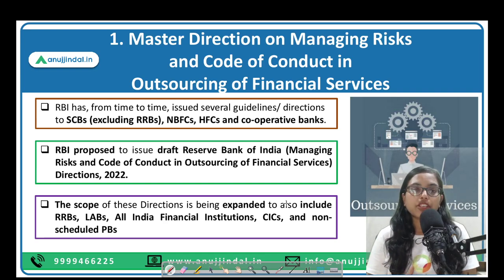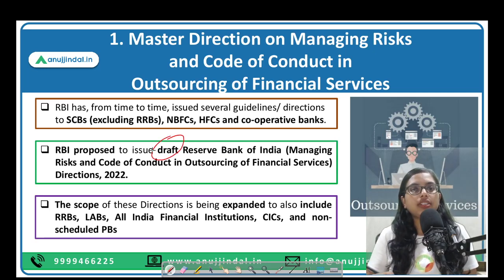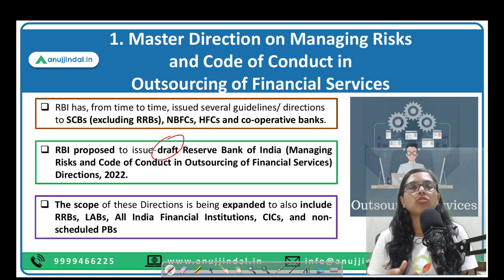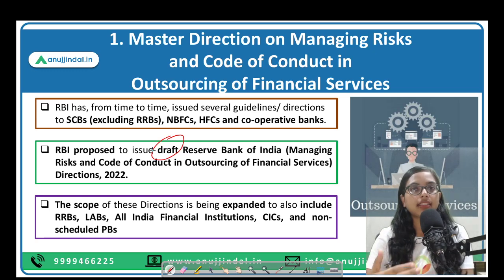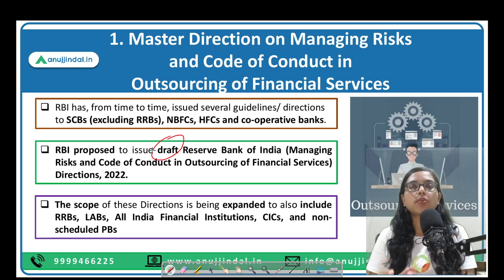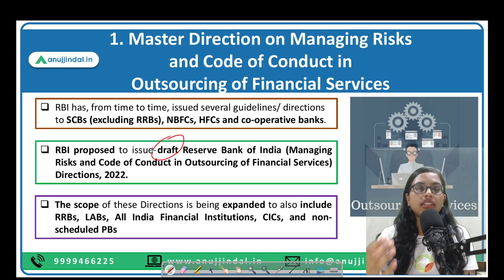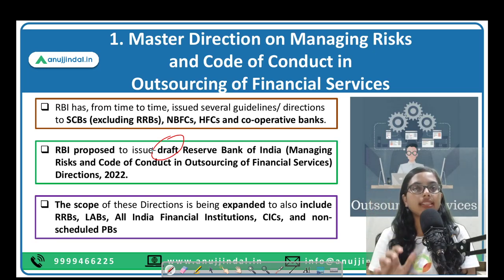We'll start with regulation and supervision. RBI has talked about two major developments: first, bringing a master direction on outsourcing of financial services; and second, including credit information companies in the Reserve Bank Integrated Ombudsman Scheme. Now, master directions are guidelines issued by RBI where all existing directions, guidelines, and further amendments are placed uniformly in one place, so that it is easier for the reader, the public, or other stakeholders to understand all information about a particular activity from one source.